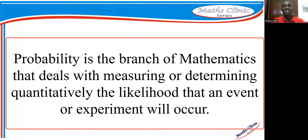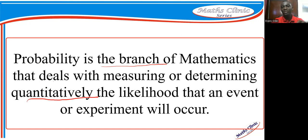So what then is probability? By definition, probability is the branch of mathematics that deals with measuring or determining quantitatively the likelihood that an event or experiment will occur. The key word is quantitatively — if you can quantify the likelihood that an event will occur or not occur, that is what we refer to as probability. For example, saying there's a 70% chance you will travel today.